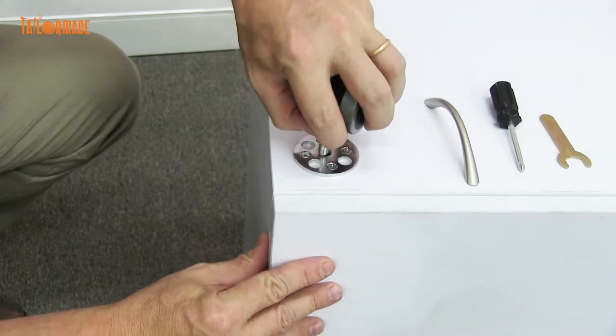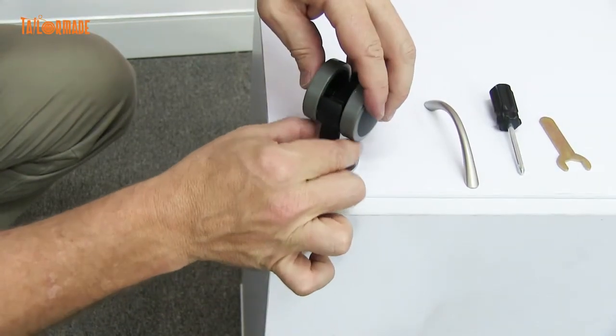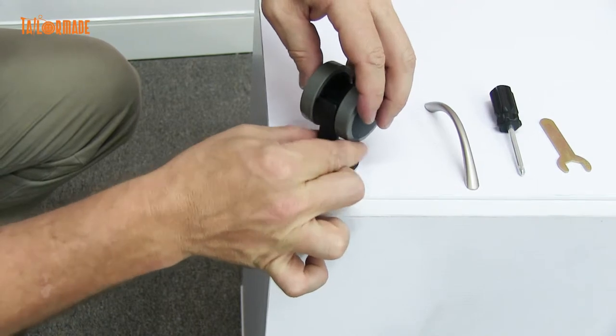With the caster, the plate comes already on for you. So all you do is put it on, use your fingers to tighten it up as far as you can.